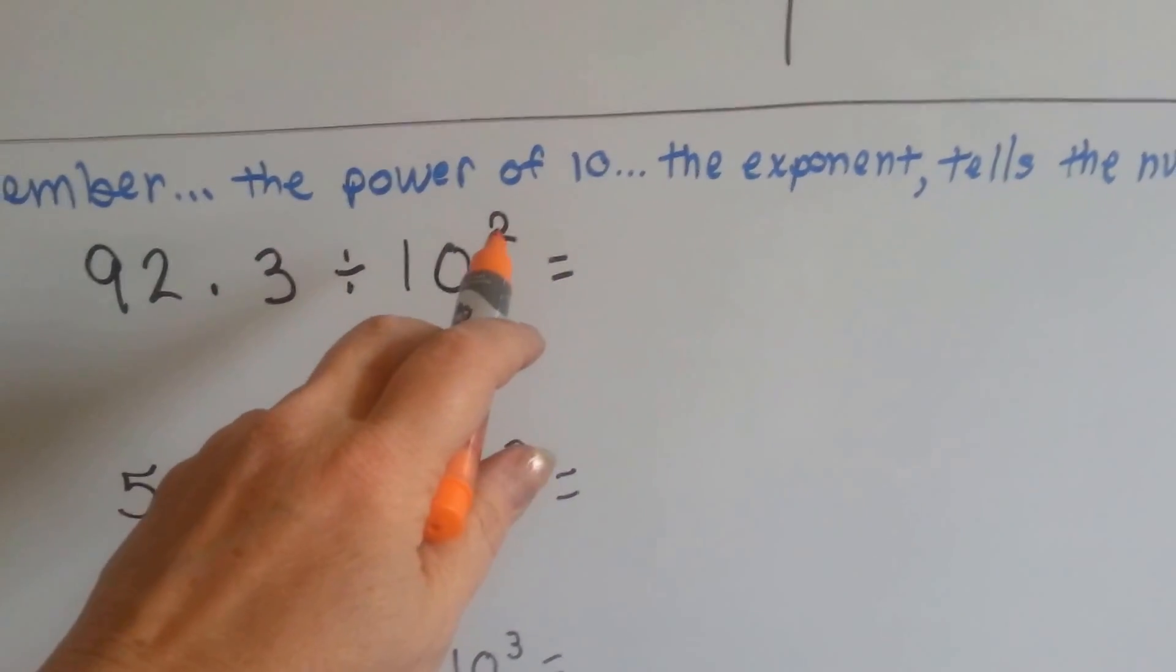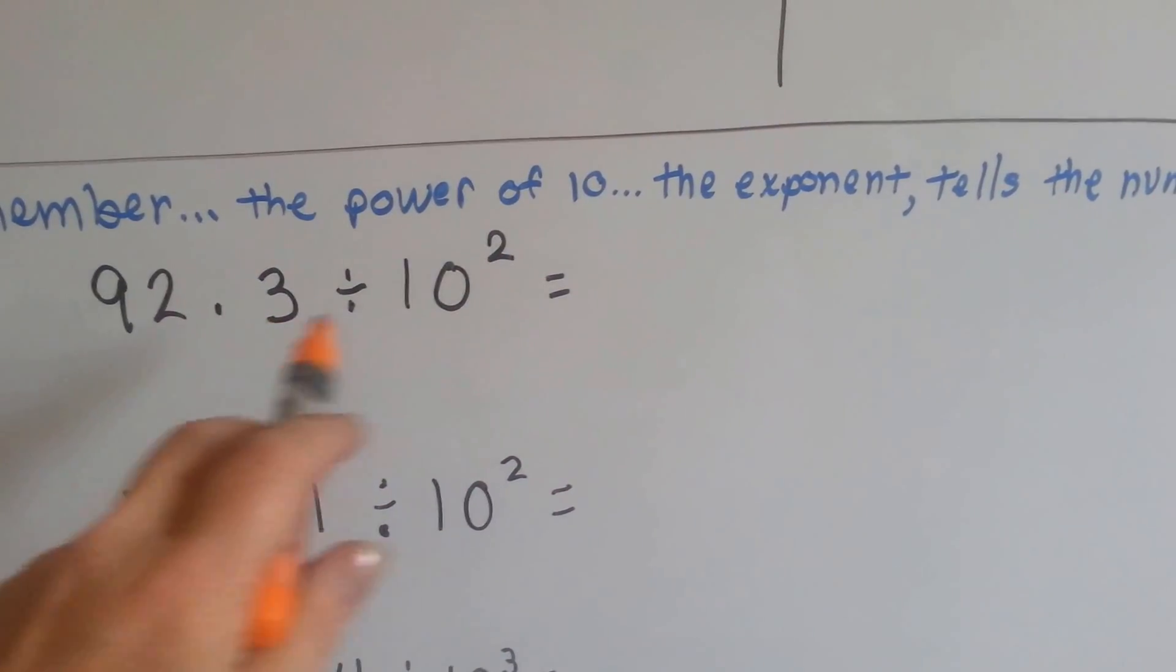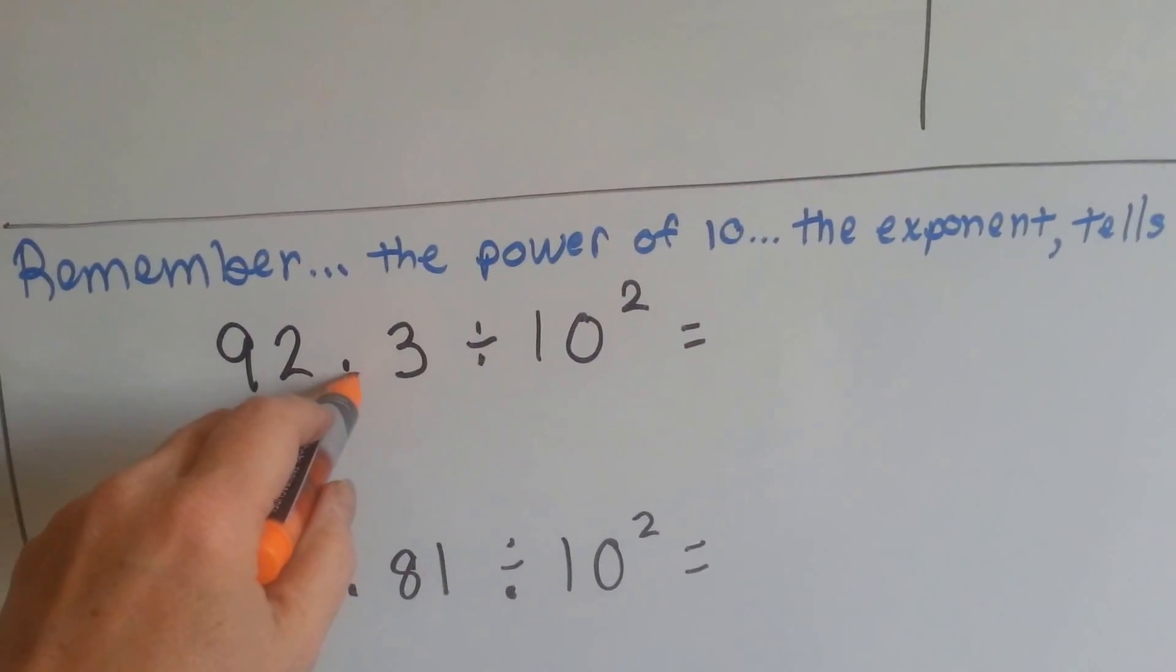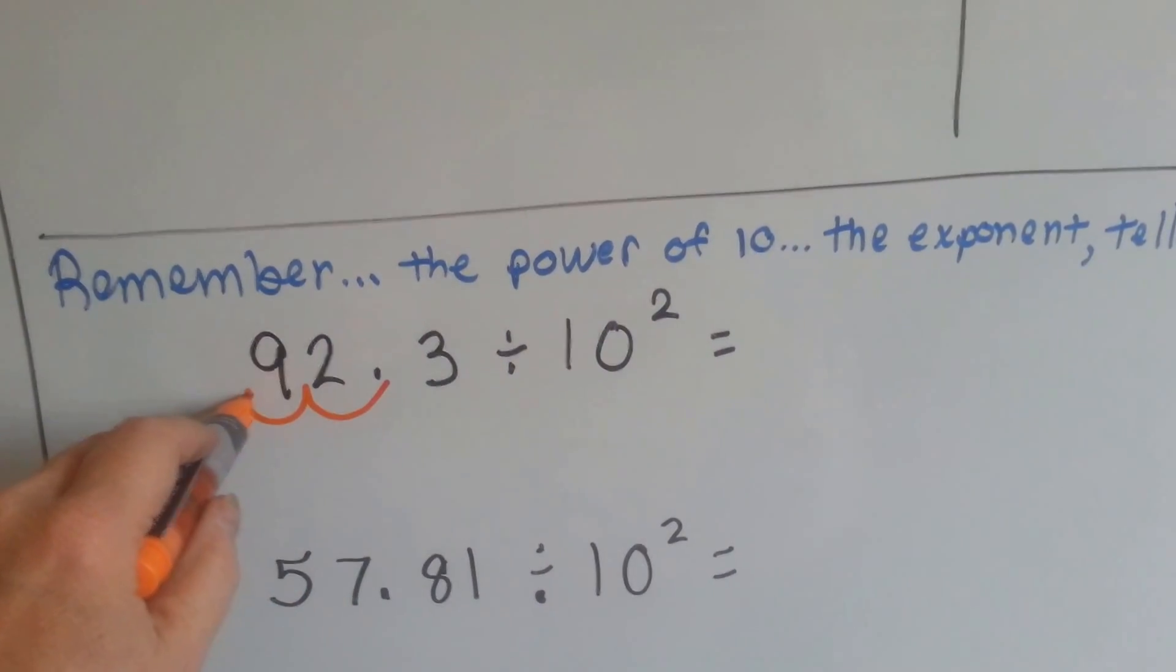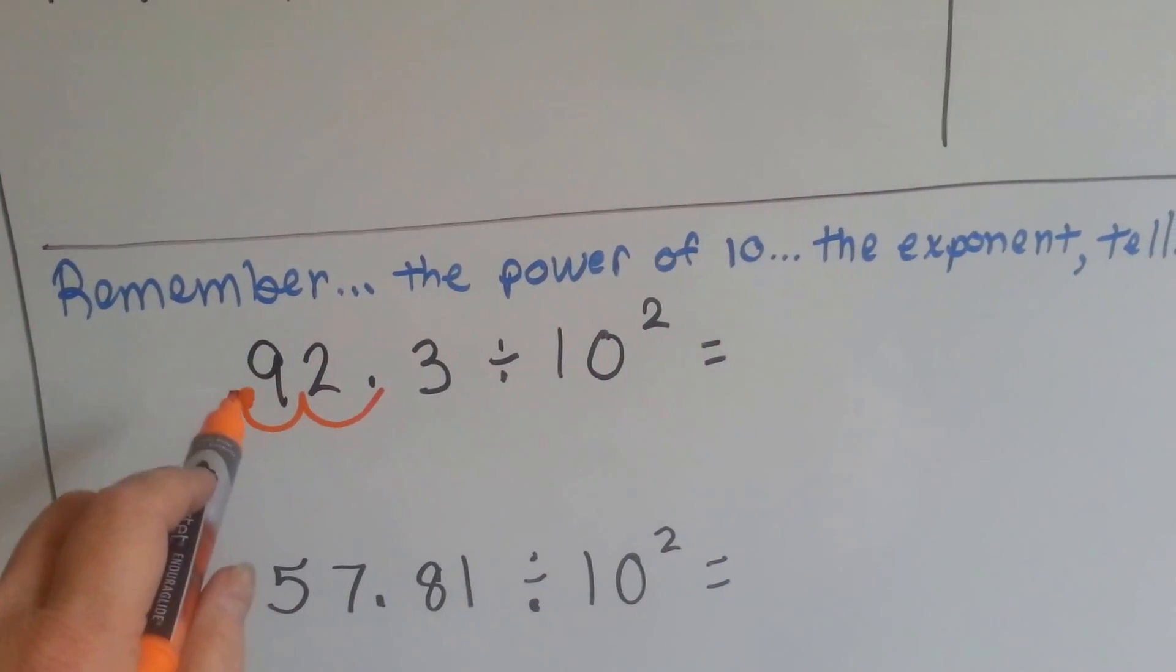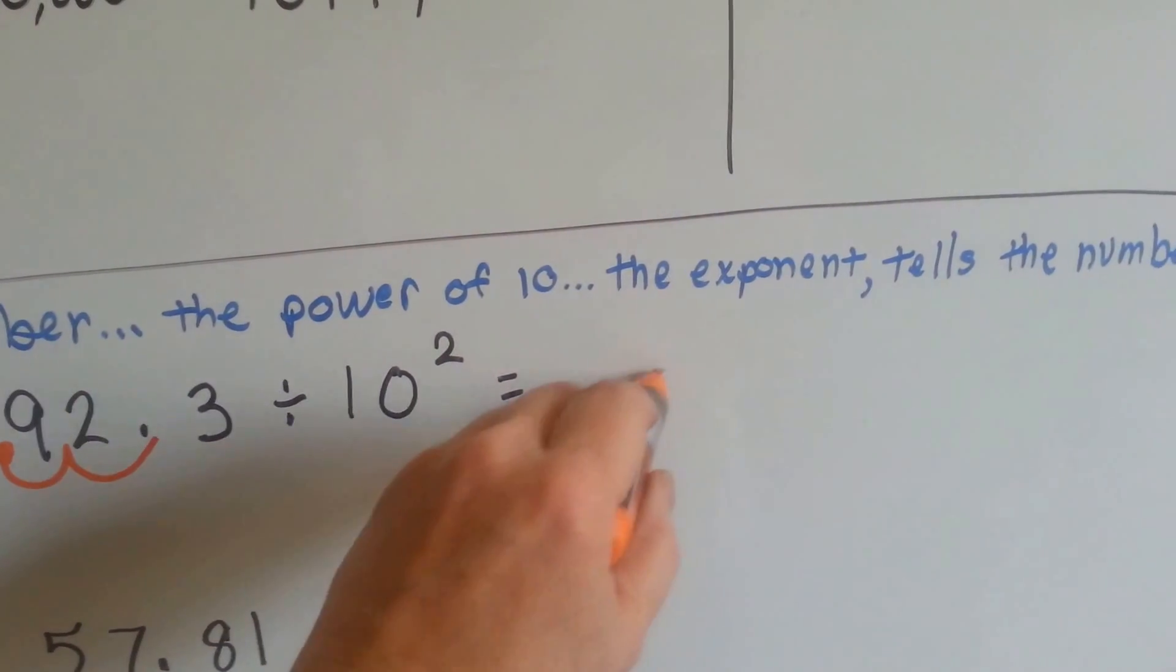It's 10 to the second power, so how many hops are we going to make? It tells us right there, 2. So, if we hop 1 time, 2 time, that means our answer is 0.92. Isn't that easy?